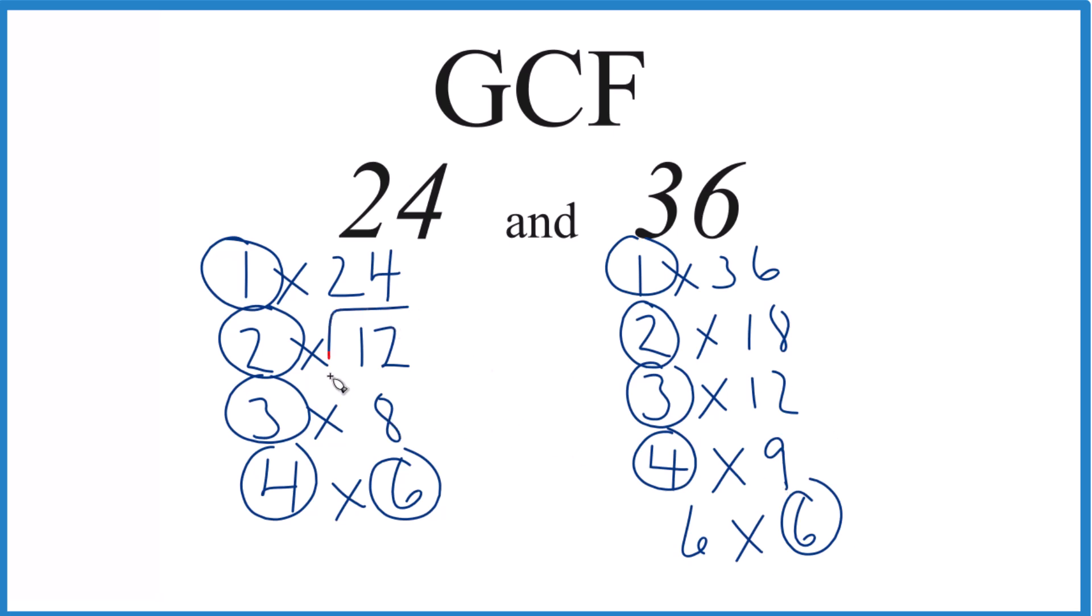So in answer to our question, the GCF for 24 and 36 is 12. There are other methods you could use like prime factorization, but unless you have a big number, this is pretty quick.